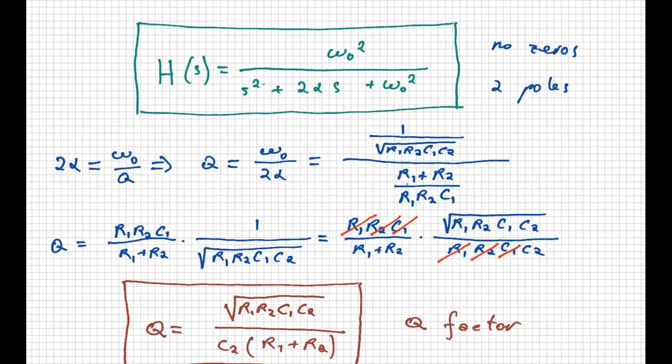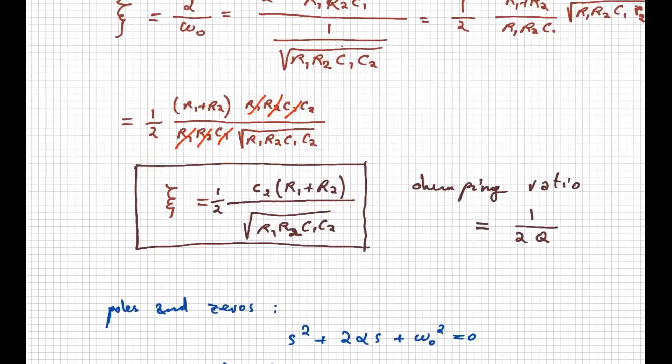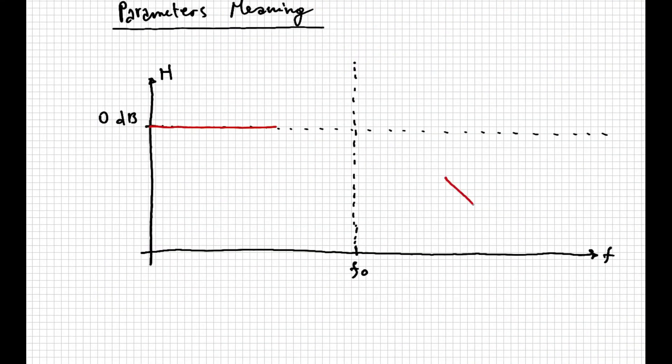Conversely, for very high frequencies, the module of the transfer function goes down at a rate of 40 dB per decade, since this is a second order filter. But what happens in between?